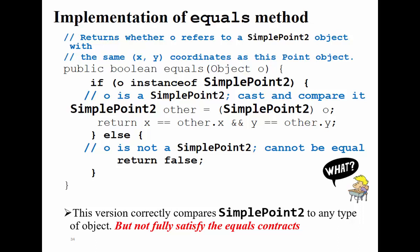This version is correct enough to compare SimplePoint2 to any type, but it does not fully satisfy the equality contracts. Whenever you decide to make a comparison between two objects for equality, you have to satisfy those contracts. In discrete mathematics, when you cover relations, you come across these terms. The implementation for equality must satisfy five constraints: reflexive, symmetric, transitive, consistent, and must not throw an exception when passed null.